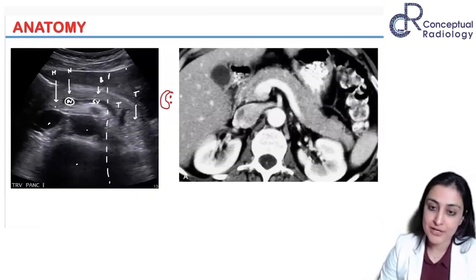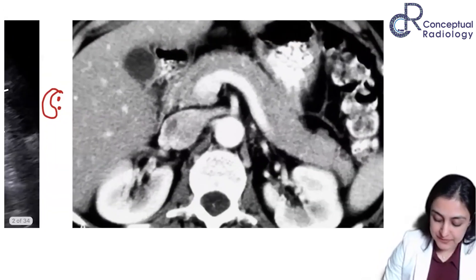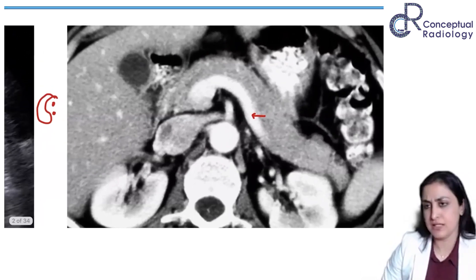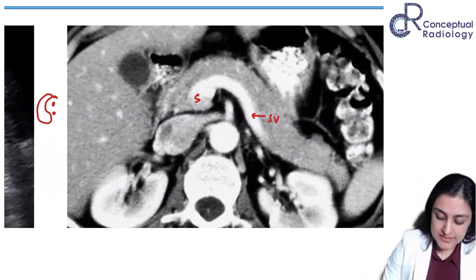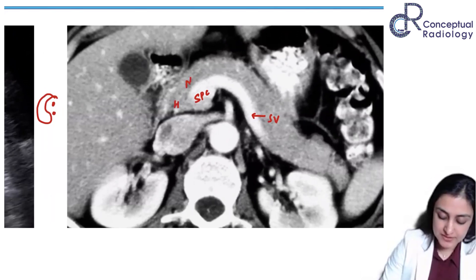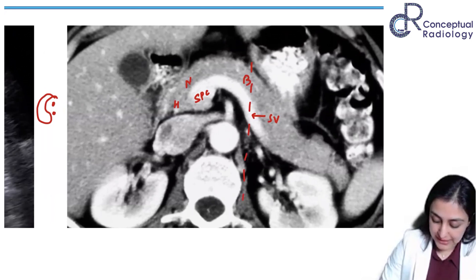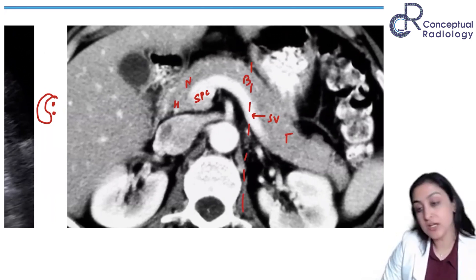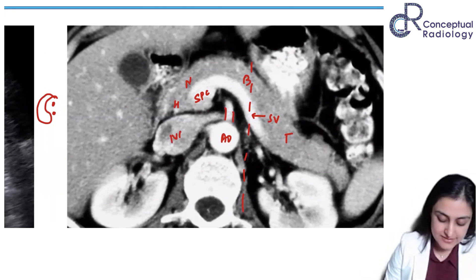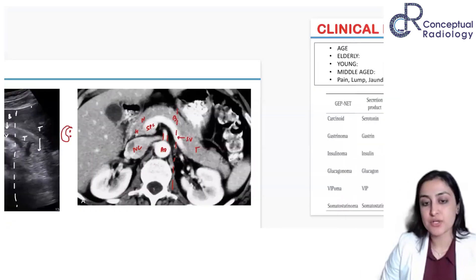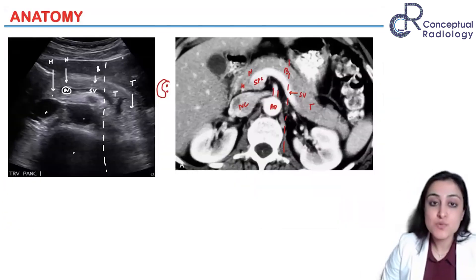The same applies on CT. Identifying what I'm labeling: this is the splenic vein, this is the splenoportal confluence — so this is the head, this is the neck, this is the body, and drawing a line through the lateral vertebral border gives us the tail of the pancreas. This is the aorta, this is the origin of the celiac axis, and this is the IVC.